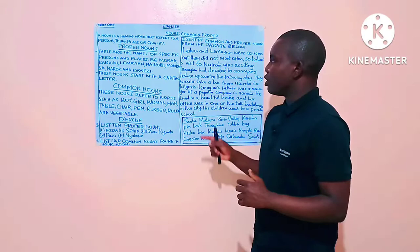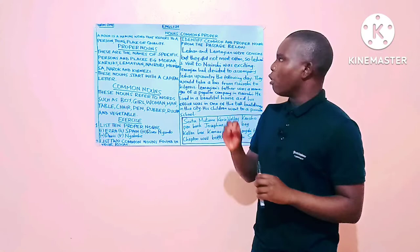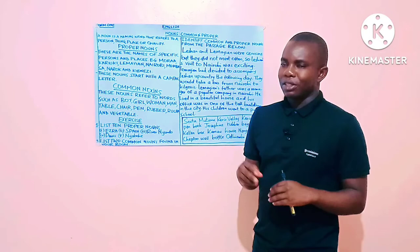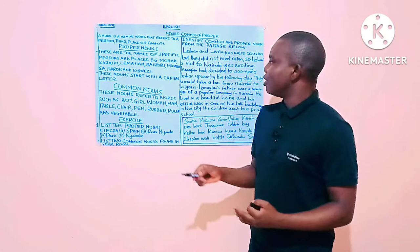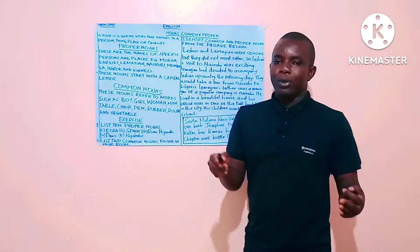Proper nouns. Proper nouns are the names of specific persons and places. We have some examples here. Mora, which is the name of a person. Kariuki, again the name of a person. Lemanyan, the name of a person.